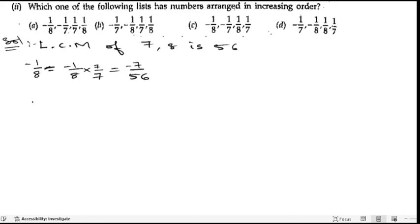Next is -1/7. So -1/7, we will multiply this with 8/8. 8 ones are 8, 7 eights are 56.